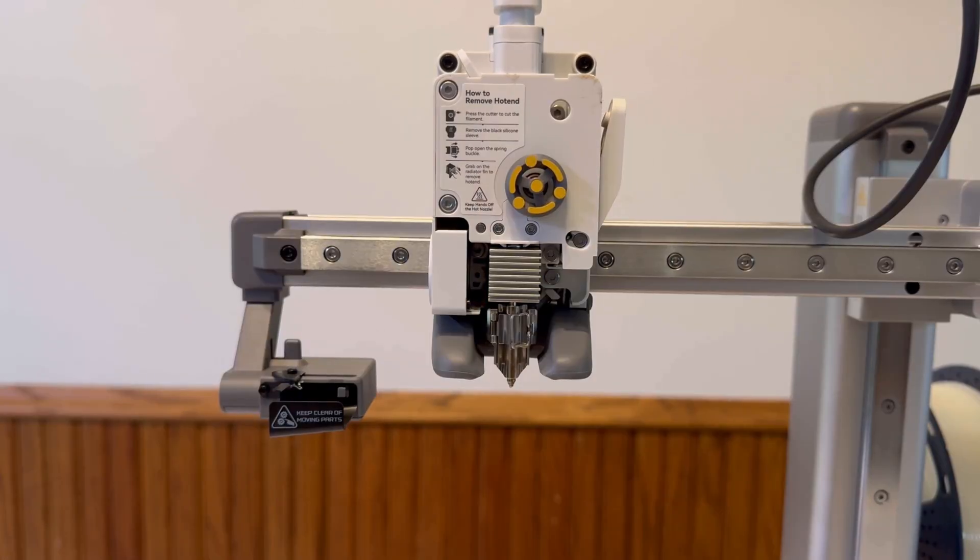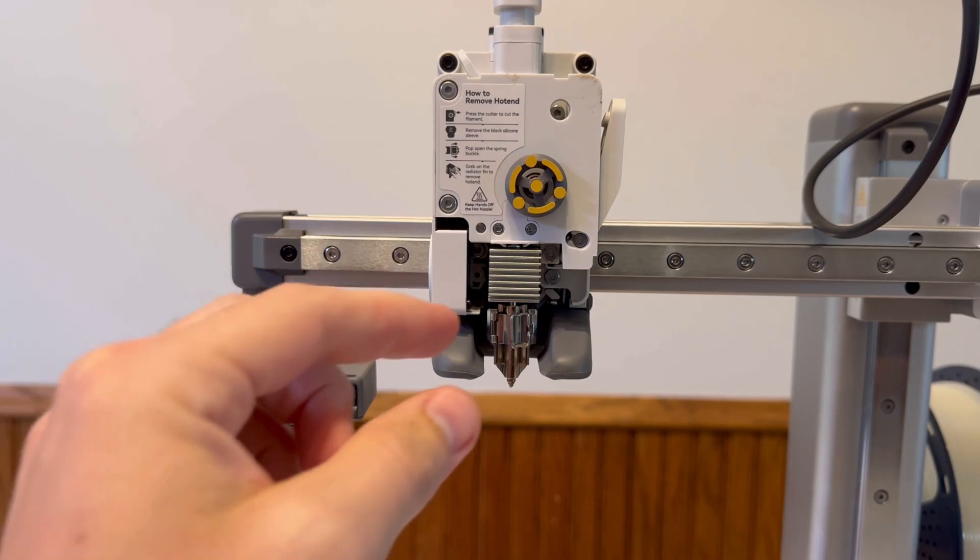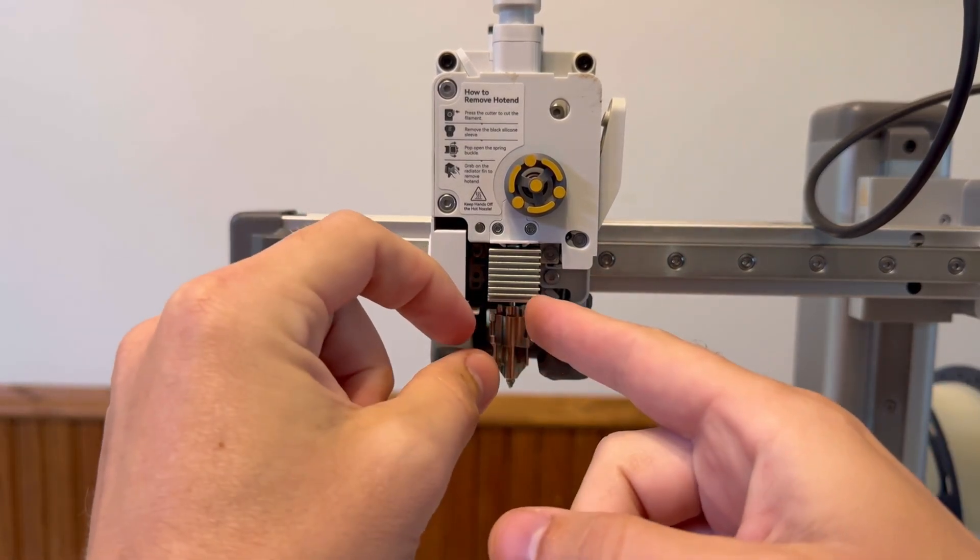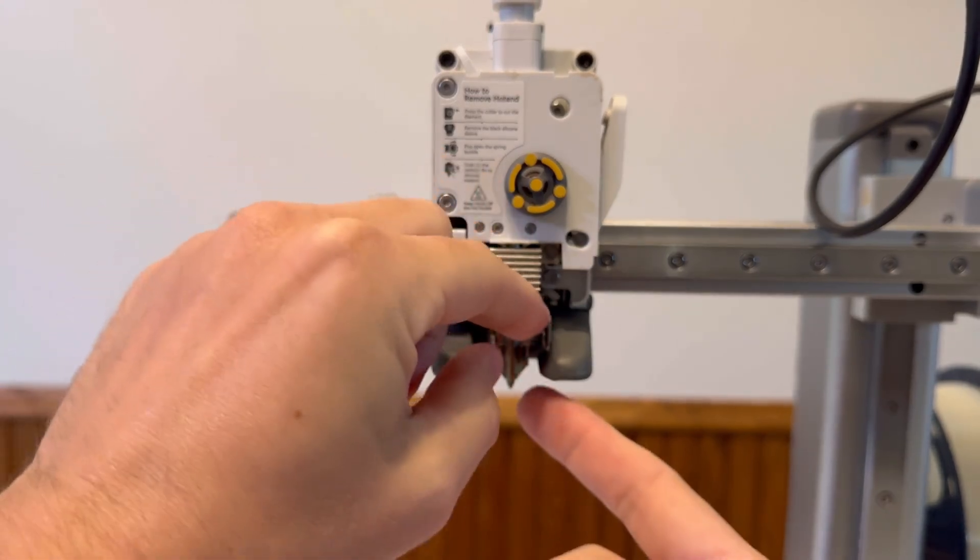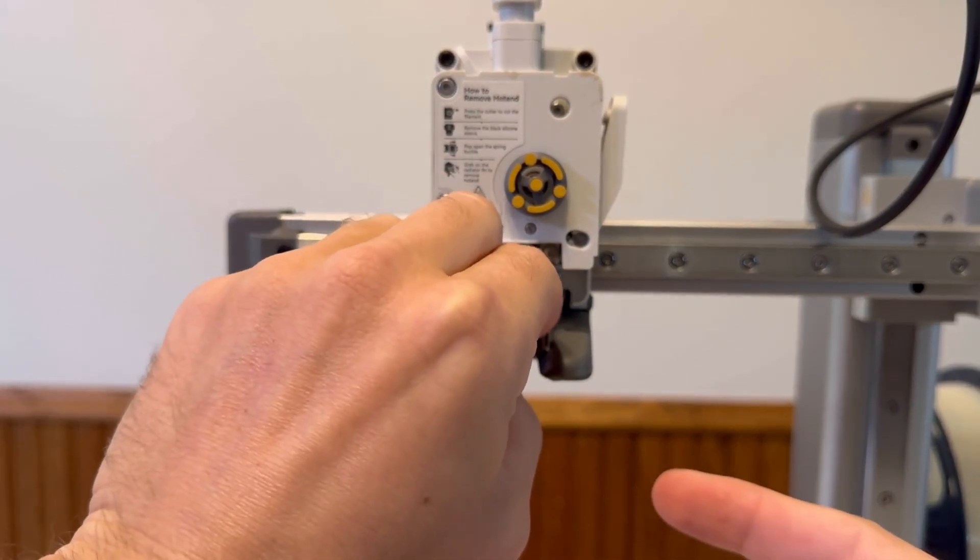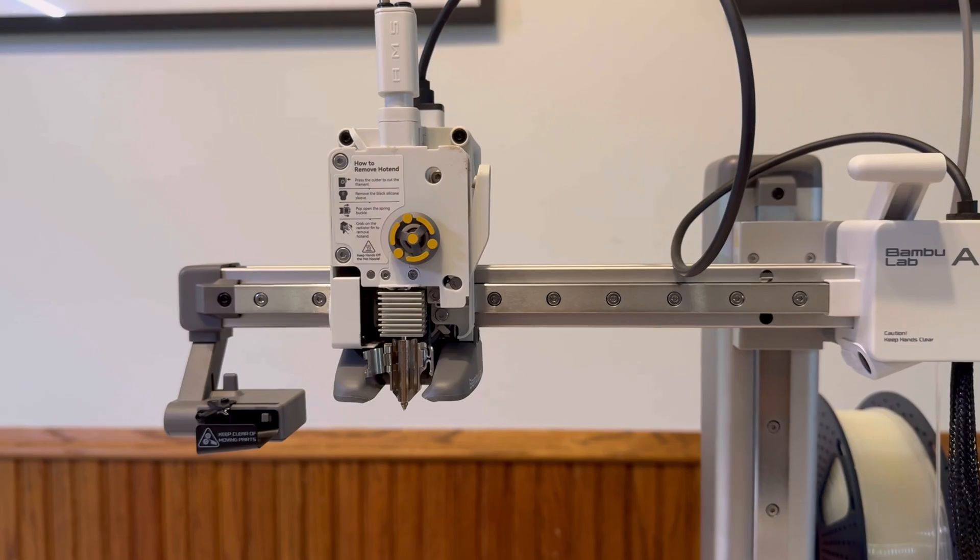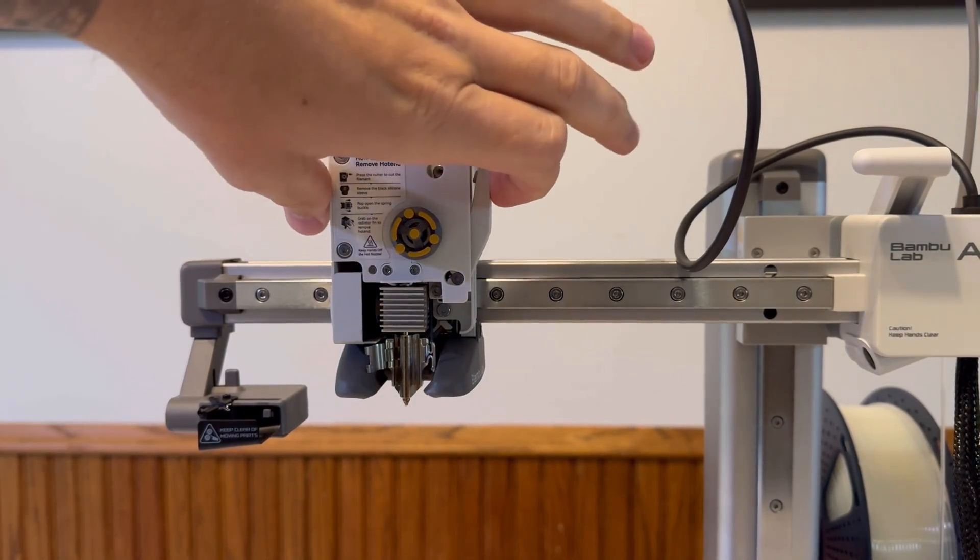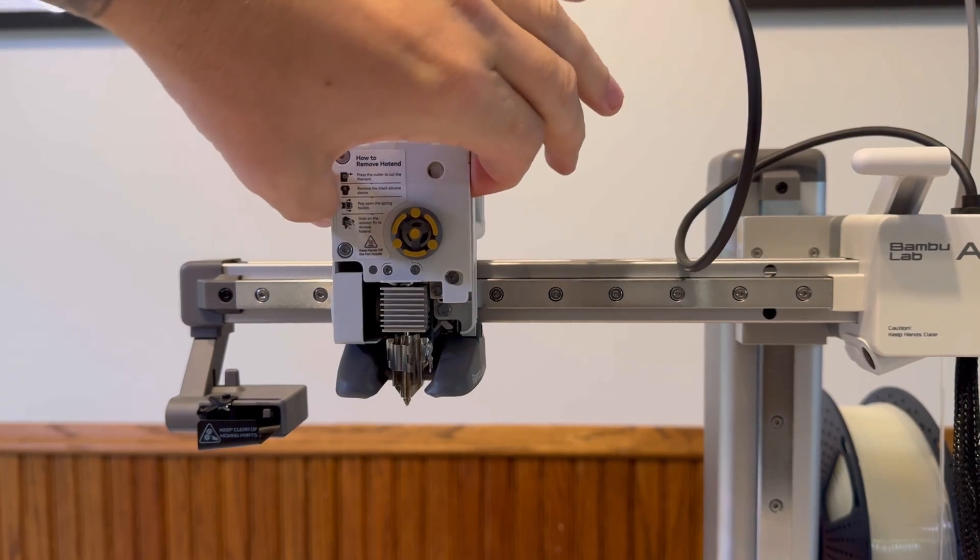Next what we're going to do is actually remove the nozzle here. There's a little clasp here, so we can undo that, and then there's another little flap that we've got to push left. You can use your hands here, or you can use a small screwdriver. Next what we want to do here is cut the filament by using this side cutter. All we have to do is click this in here, give it a hard click.